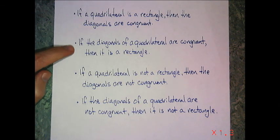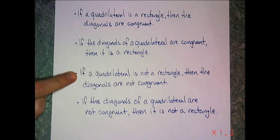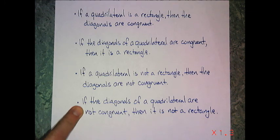The second, if the diagonals of a quadrilateral are congruent, then it is a rectangle. If a quadrilateral is not a rectangle, then the diagonals are not congruent. And if the diagonals of quadrilateral are not congruent, then it is not a rectangle.